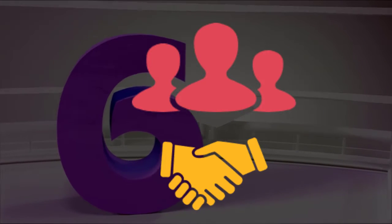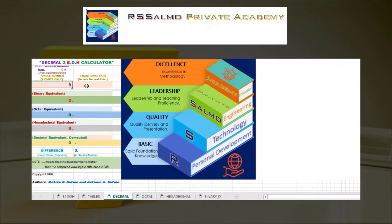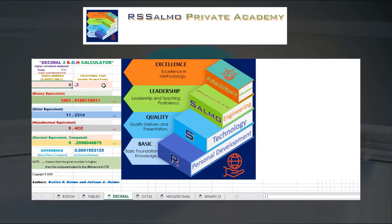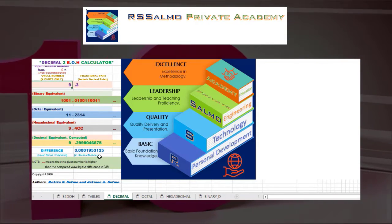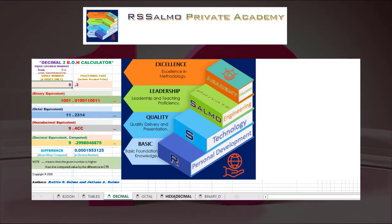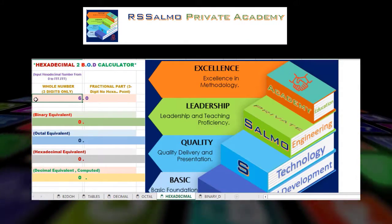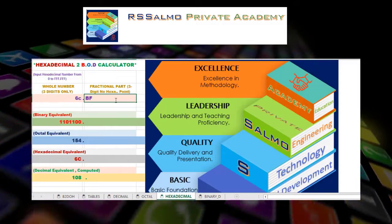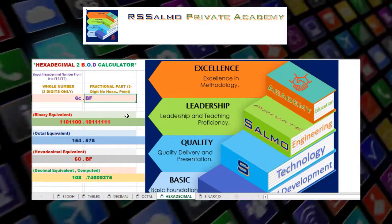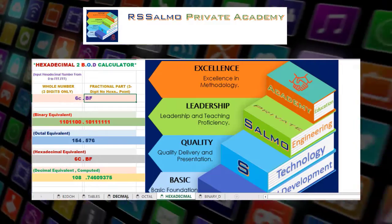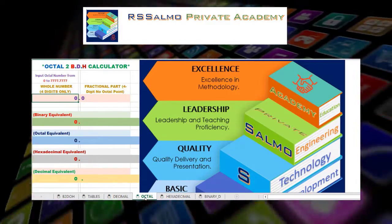Amaze your friends with the new skills that you will learn from this course. How do they convert the decimal number 9.3 to its binary equivalent? How about the hexadecimal number 6C.BF to its octal equivalent? The fun part is, you can easily convert from any of the 4 number systems to any other by using only addition and subtraction operations.